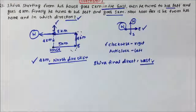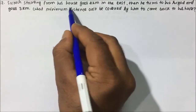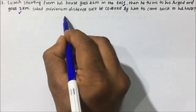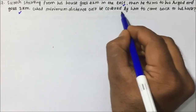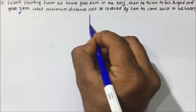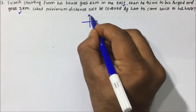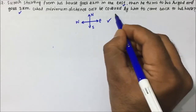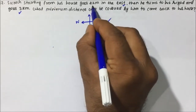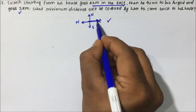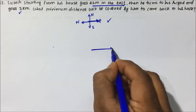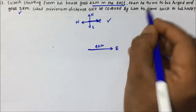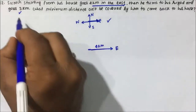Let's move to question number 2. Suresh, starting from his house, goes 4 kilometers in the east. Then he turns to his right and goes 3 kilometers. What minimum distance will be covered by him to come back to his house? So first, draw the direction diagram. Suresh goes 4 kilometers east, then takes a right turn and goes 3 kilometers.